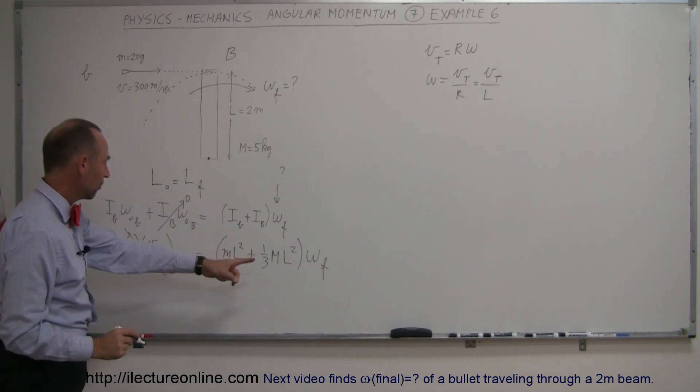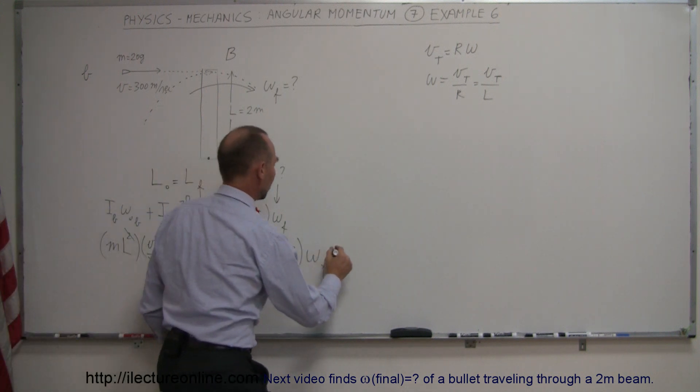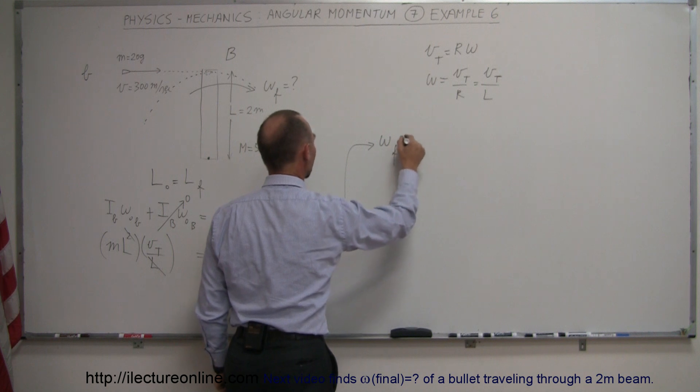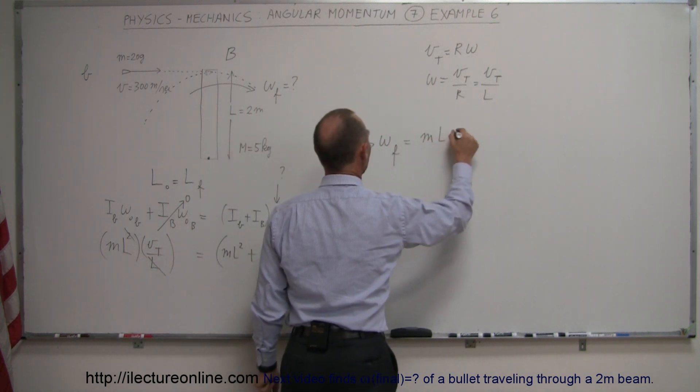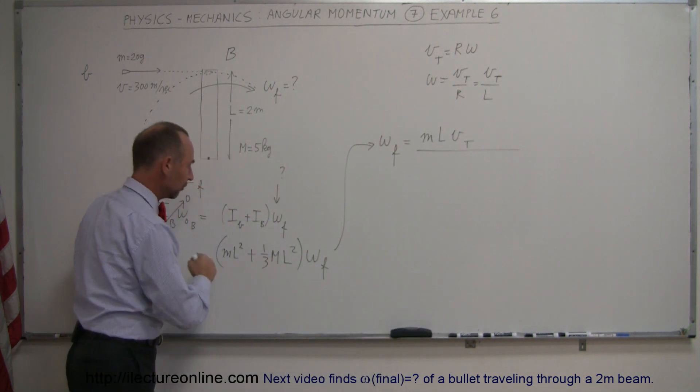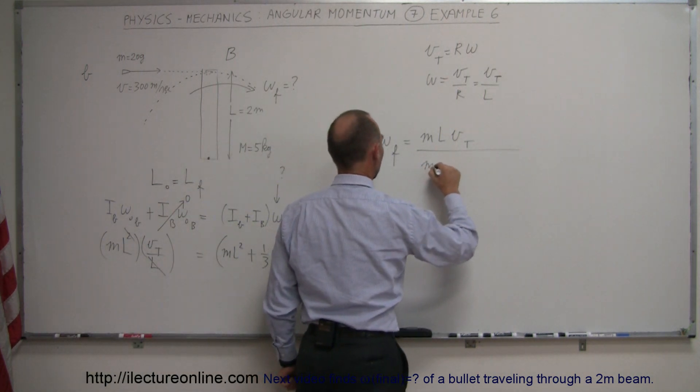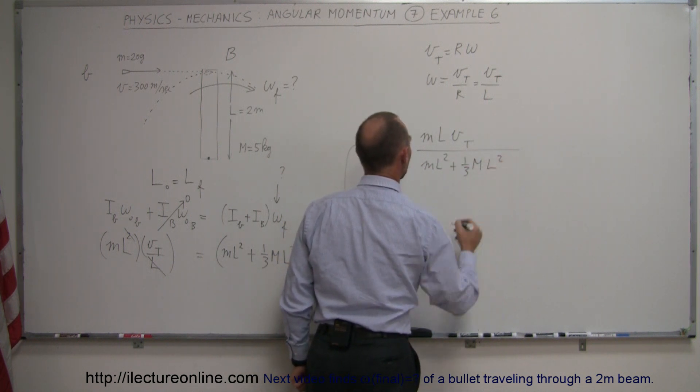So finally if we're looking for omega final, we take the left side equation divided by that. Then we can say the final angular velocity is equal to the left side equation which is ML times the tangential velocity of the bullet divided by the sum of the moment of inertia which is ML squared plus one-third big M for the mass of the beam times L squared.